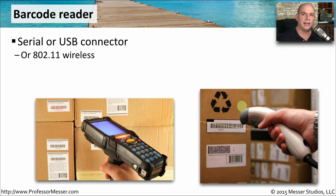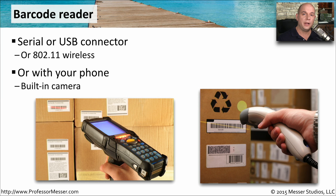Many retail establishments have barcode readers that are able to read barcodes off of merchandise. These are connected with a serial or USB connection, and you might also find 802.11 wireless connectivity on these barcode readers. One of the newer kinds of barcode readers is on your mobile phone — the camera on the mobile phone is able to read the barcode, and software inside your mobile device is able to interpret the results.